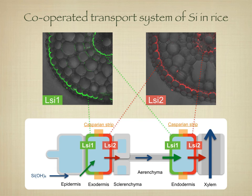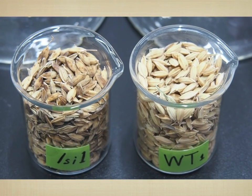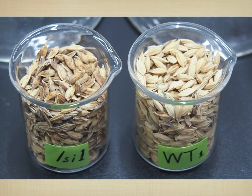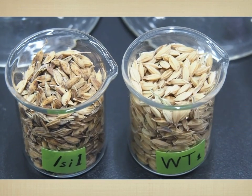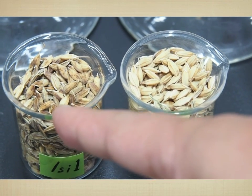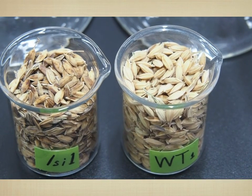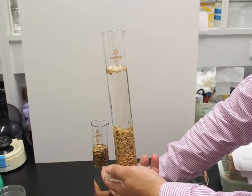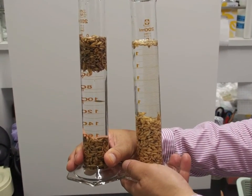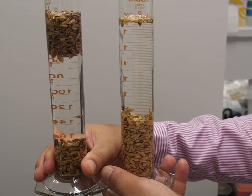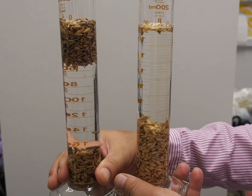However, LSI-1 and LSI-2 show different polarities: LSI-1 at the distal side, while LSI-2 at the proximal side of both exodermis and endodermis. Knockout of LSI-1 or LSI-2 resulted in a significant loss of rice yield. This is wild-type and this is the LSI-1 mutant — you can see the discoloration in the mutant seeds due to pathogen infection, and the fertility in the mutant was greatly decreased. Therefore, co-operation of LSI-1 and LSI-2 is required for the efficient uptake of silicon in rice.